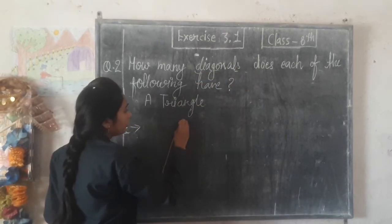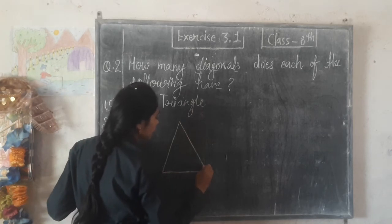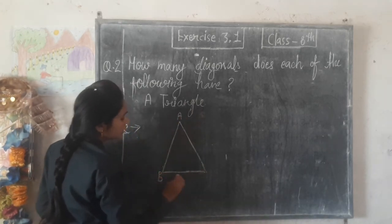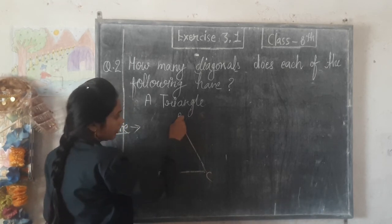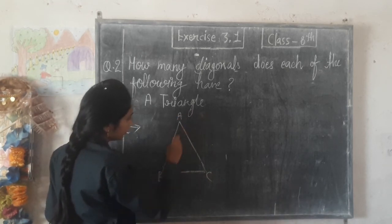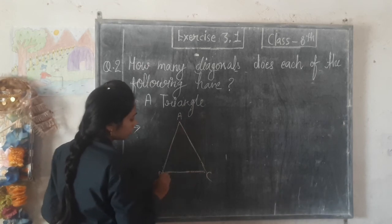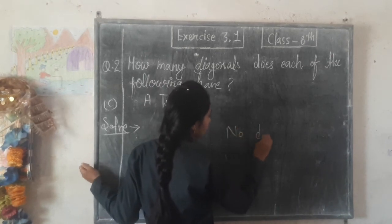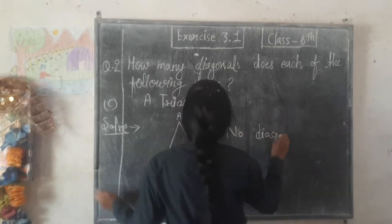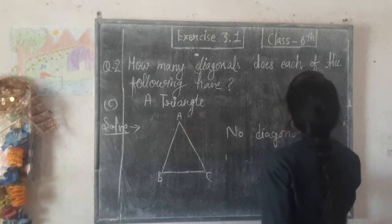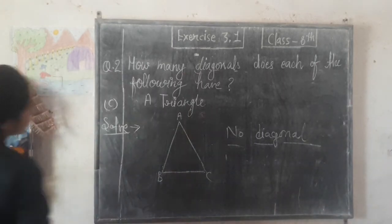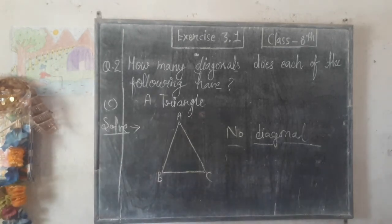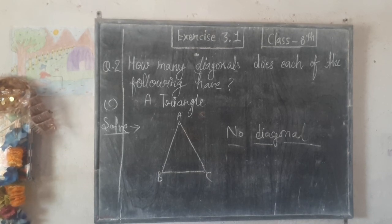Question number C: is a triangle. A triangle has vertices A, B, C. Checking A to B — that is a side, no diagonal. B to A — no diagonal. B to C — no diagonal. C to A — no diagonal. So the answer is: a triangle has zero diagonals.